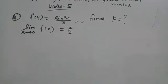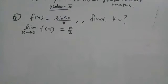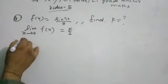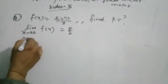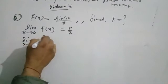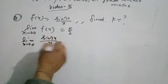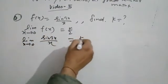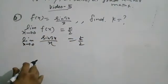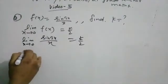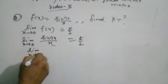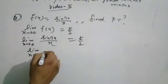Question: f(x) = sin(3x)/x. Find the value of k, given that limit x tends to 0 of f(x) equals k/2. We know limit x tends to 0 of sin(3x)/x equals k/2, and using the identity sin θ/θ = 1 as θ tends to 0.